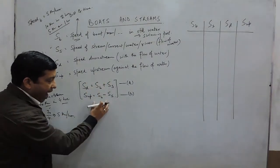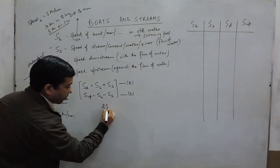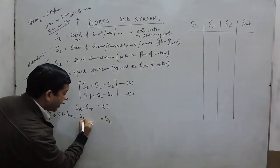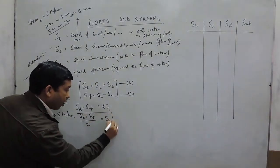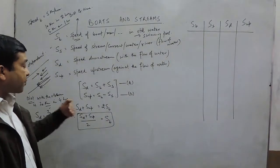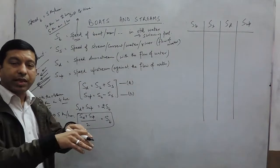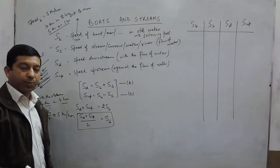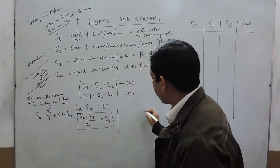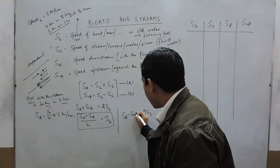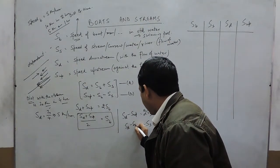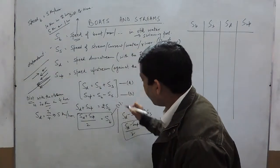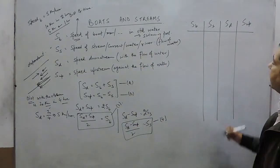If we add the downstream and upstream speed equations, we get: speed of boat (SB) = (speed downstream + speed upstream) / 2. This makes sense because downstream adds the stream speed and upstream subtracts it, so averaging the two cancels out the stream. Similarly, subtracting the two equations gives: speed of stream (SS) = (speed downstream − speed upstream) / 2. These are the third and fourth formulas.